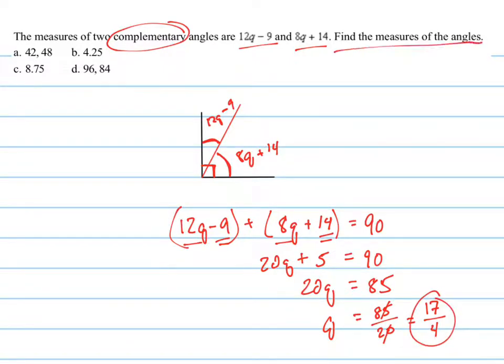So now it says find the measure of the angles. Well, now we got to plug that back in to each one of these things right here. So we're plugging in 17 over 4. So 12 times 17 over 4 minus 9, that's going to be one of your angles. Now let me show you a little trick here. The reason I kept this and I reduced it is because now you can see that these are going to cancel out.